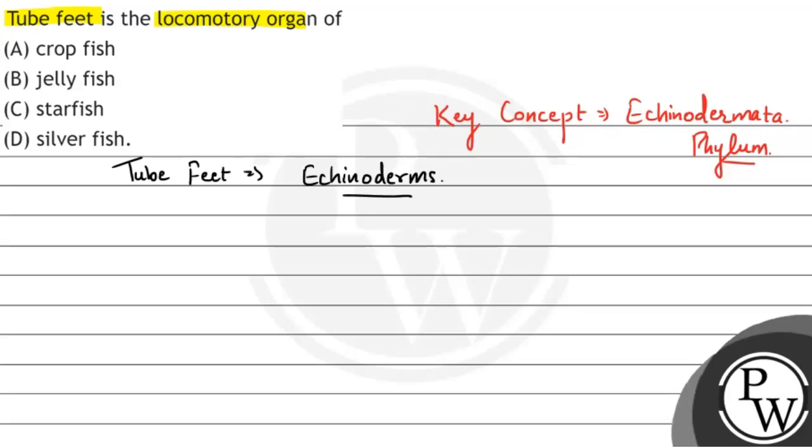What is present in echinoderms? Sea urchins. And one of the best examples of echinoderms is starfish. It is the shape of starfish, and it is also a member of echinoderm phylum.